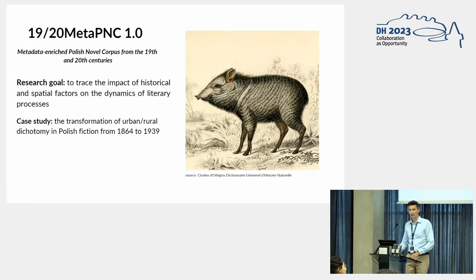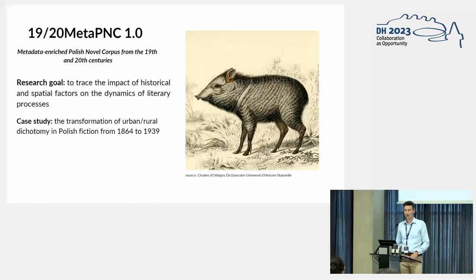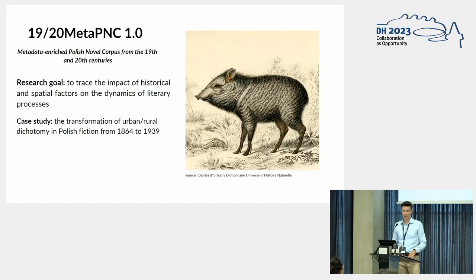As an example of a literary corpus, I would like to show you 1920 Meta PNC — a metadata-enriched Polish novel corpus from the 19th and 20th century. This is the creation of our group, and we wanted to trace the impact of historical and spatial factors on the dynamics of the literary process. We studied the transformation of the rural and urban dichotomy in Polish fiction.